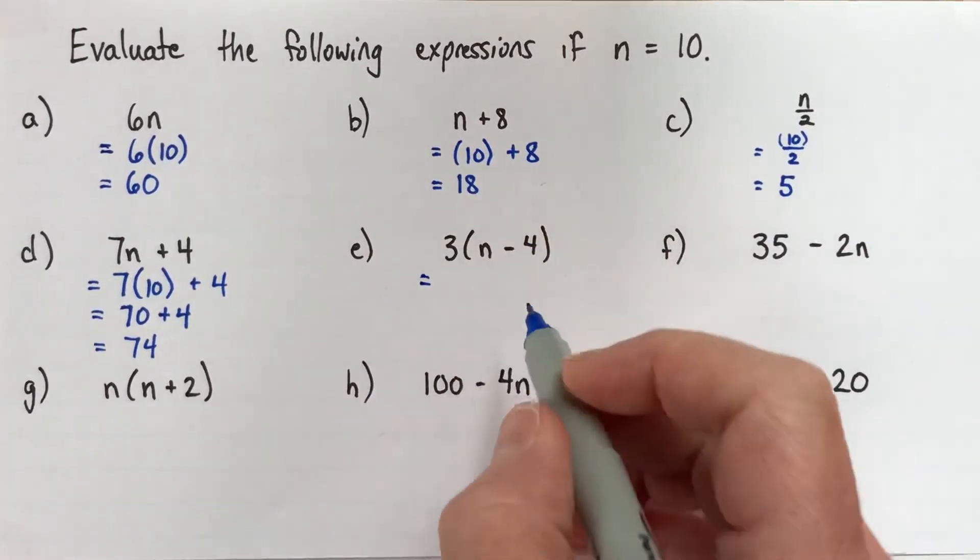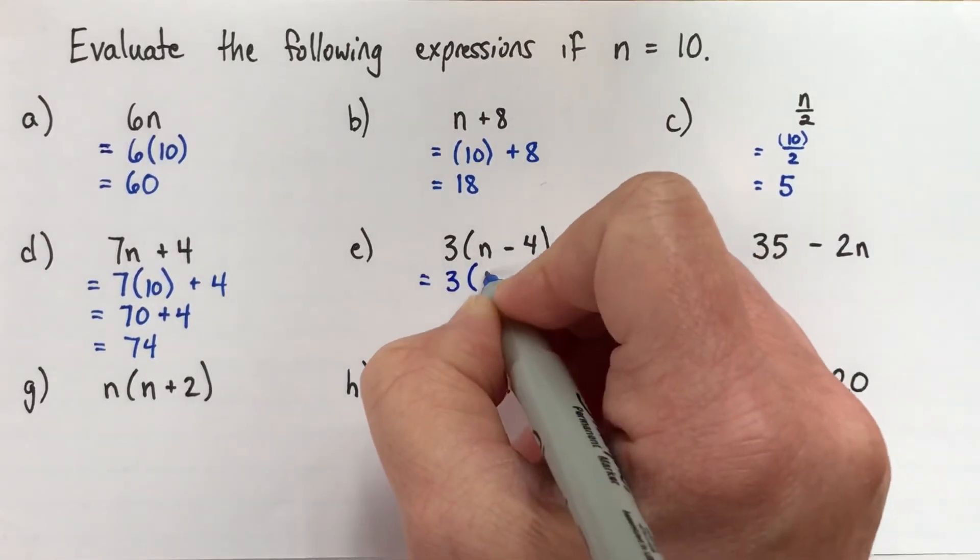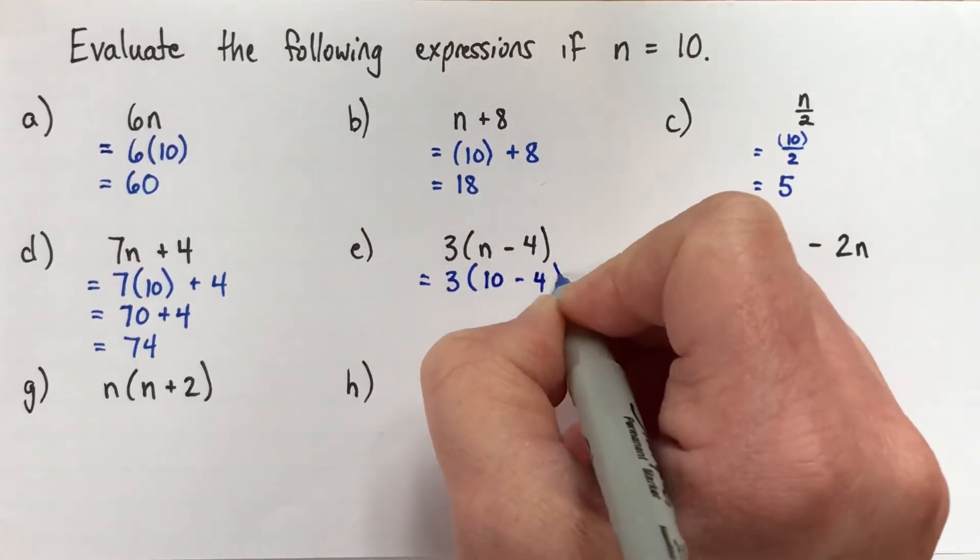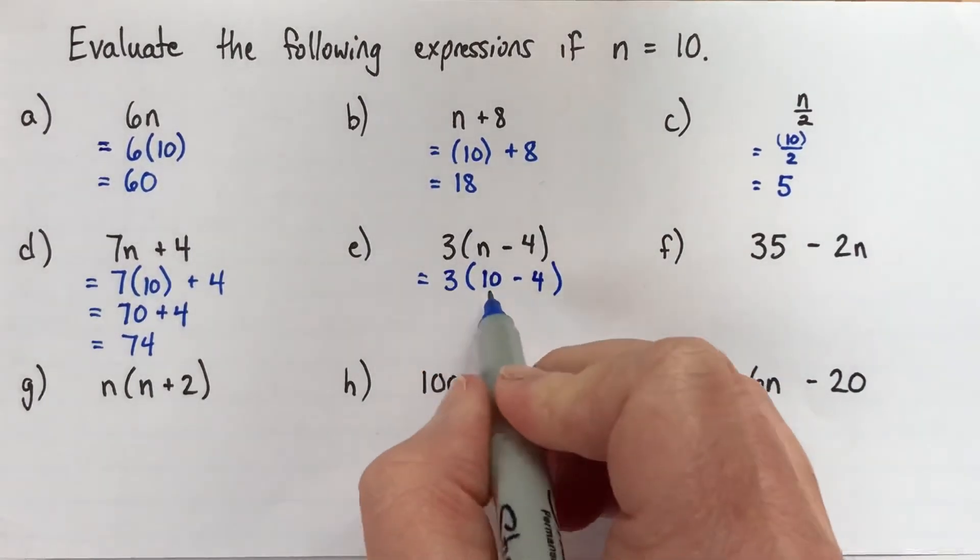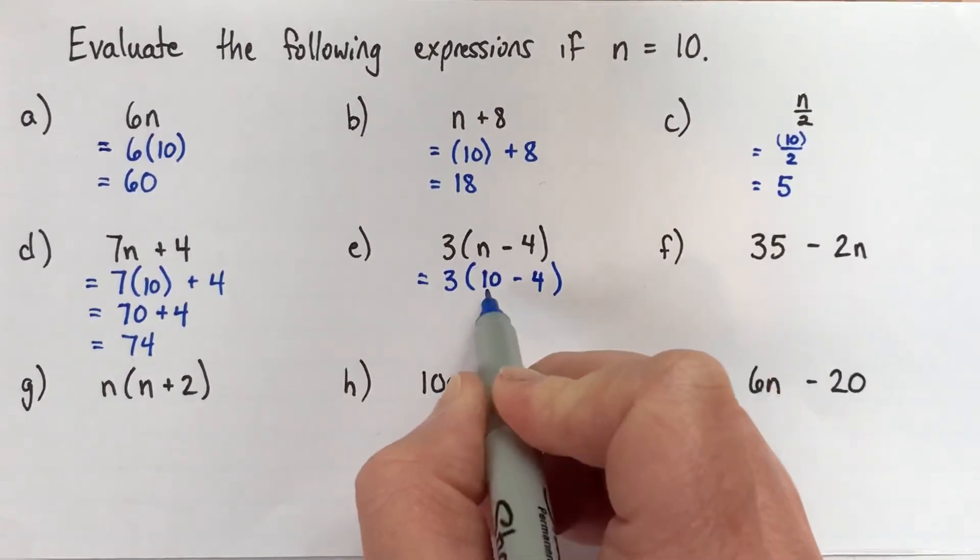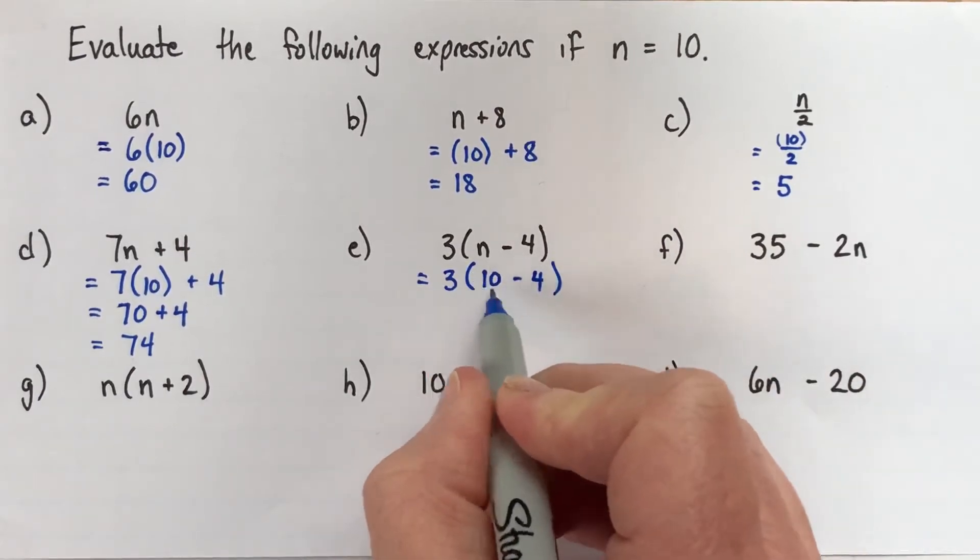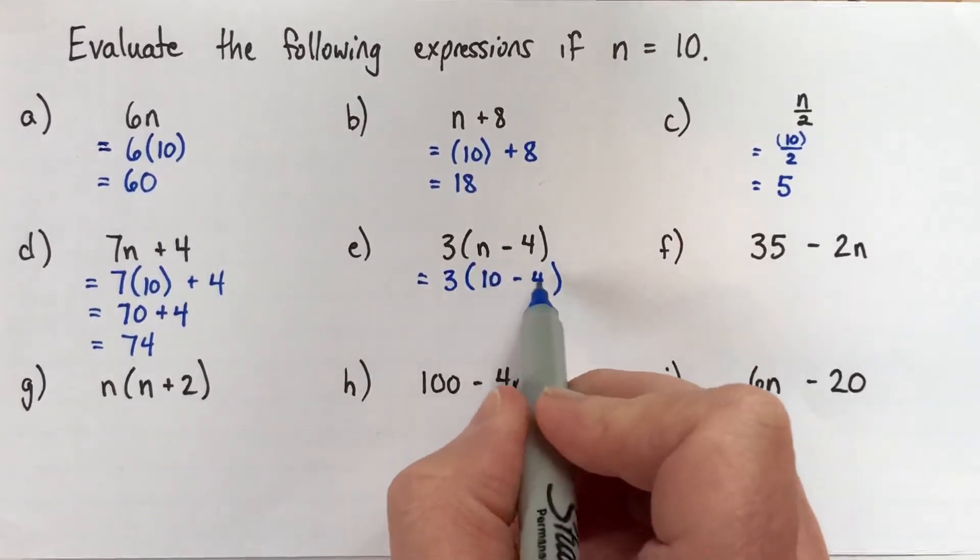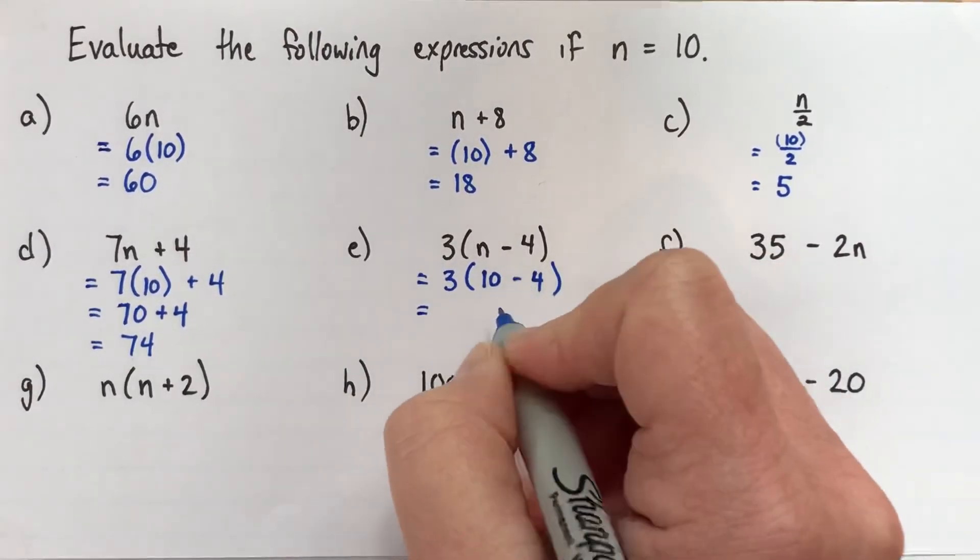Alright, the next one. 3 times n subtract 4. So I'm going to replace my n with 10. In this case the brackets won't matter. And there's enough other brackets that I'll leave them off, just so it doesn't look kind of confusing. So this is a multiplication here between the 3 and the brackets. And we've got a subtraction in the brackets. Because of the order of operations, it tells us to do the operations in brackets first, if there are any. Up here, for example, there was nothing to do in the brackets, so we didn't need to. But here, there is something to do in the brackets. So the thing in the brackets, 10 subtract 4, that's 6.